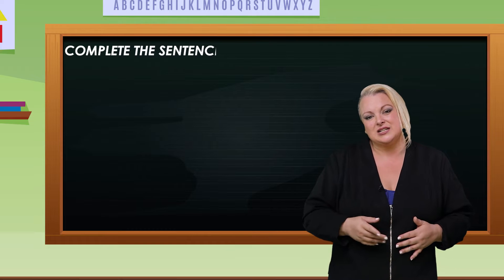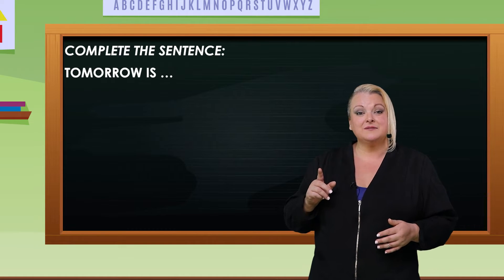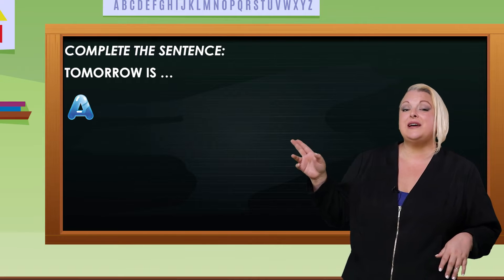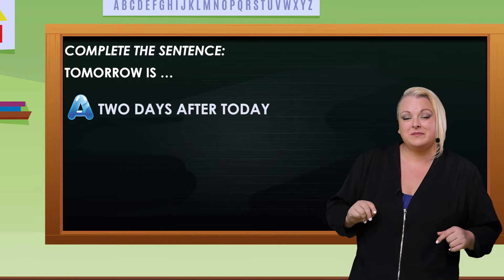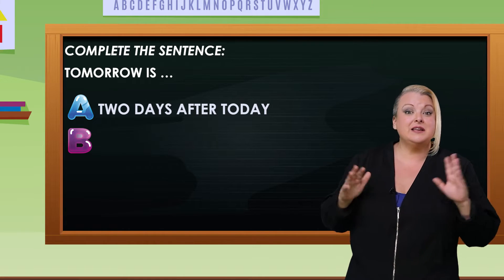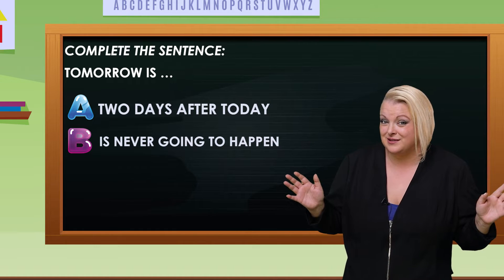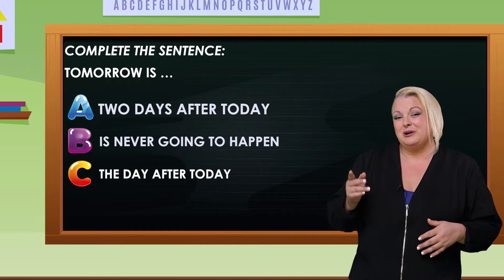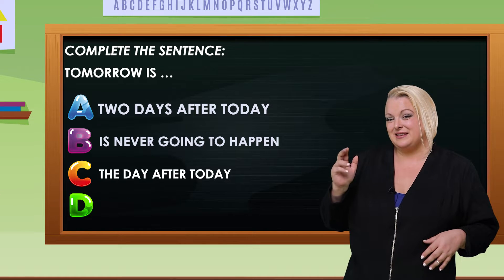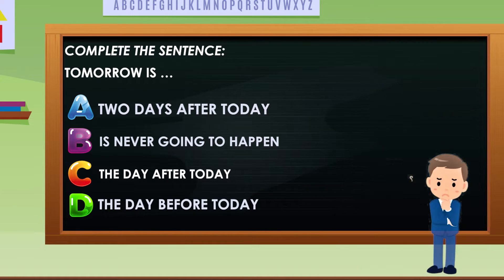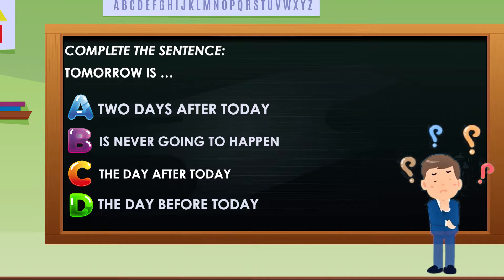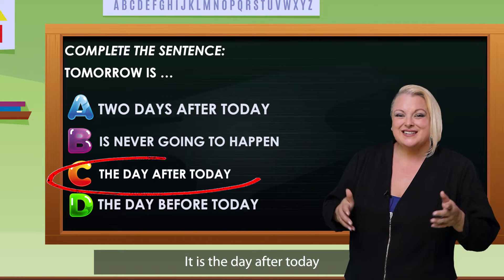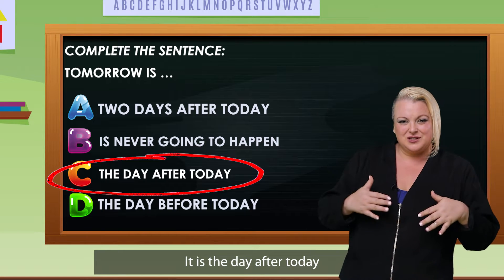Complete the sentence: Tomorrow is — is it a) two days after today, b) is never going to happen, c) the day after today, or d) the day before today? That's right — it's the day after today.